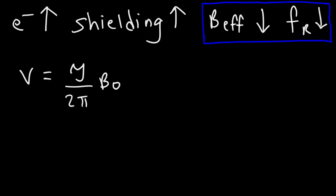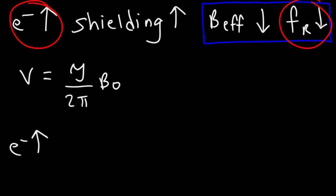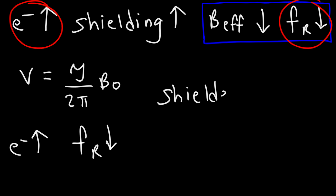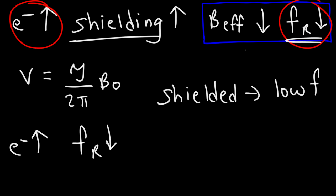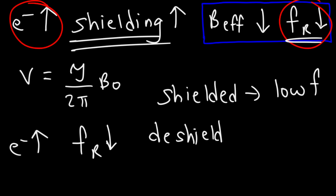Combining these two statements: if a nucleus is in an electron-rich environment, it requires a lower frequency to achieve resonance. Thus, a nucleus that is shielded will appear on an NMR spectrum at a low frequency, and a nucleus that is deshielded from an external magnetic field will appear at a higher frequency on an NMR graph.